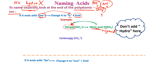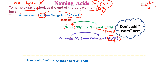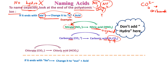For example carbonate (CO3²−): put H with it, change ATE to IC, add acid — 'carbonic acid.' Chlorate: put H, change ATE to IC — 'chloric acid.' Sulfate (SO4²−): change ATE to IC — 'sulfuric acid.' Always add the word 'acid' as the second word.